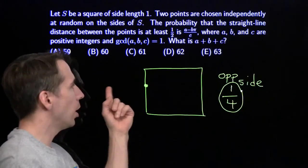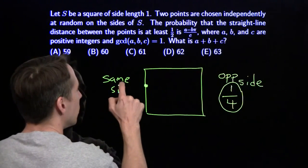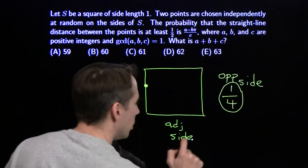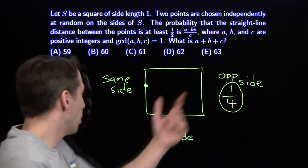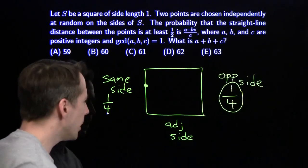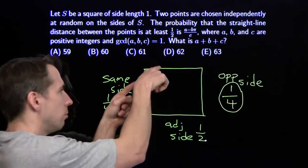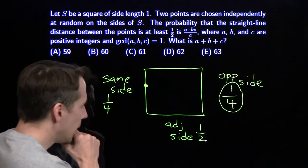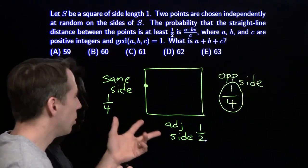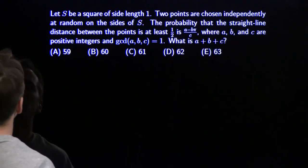We do have a good idea of what our other cases are. We've got the same side and we've got adjacent side. The probability the two points end up on the same side is a quarter. Once we've chosen the first point, there's one of the four sides where the second point can land on the same side. And adjacent side — that leaves half; they'll land on one of these two sides half the time. But these cases are harder, because we don't always win or always lose. So we're going to tackle the same side first and draw another picture.